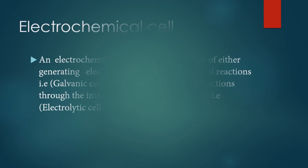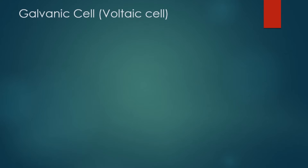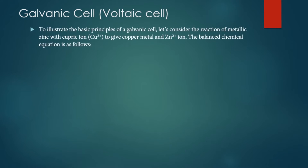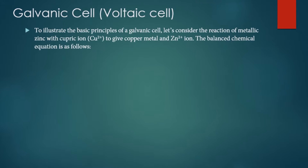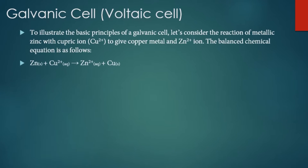The cell which generates electrical energy from chemical reactions is called a galvanic cell or voltaic cell. Basically, a galvanic cell is composed of three major parts: the anode half cell, the cathode half cell, and the salt bridge. To illustrate, let's consider the reaction of metallic zinc with cupric ion to give copper metal and zinc 2+ ion.